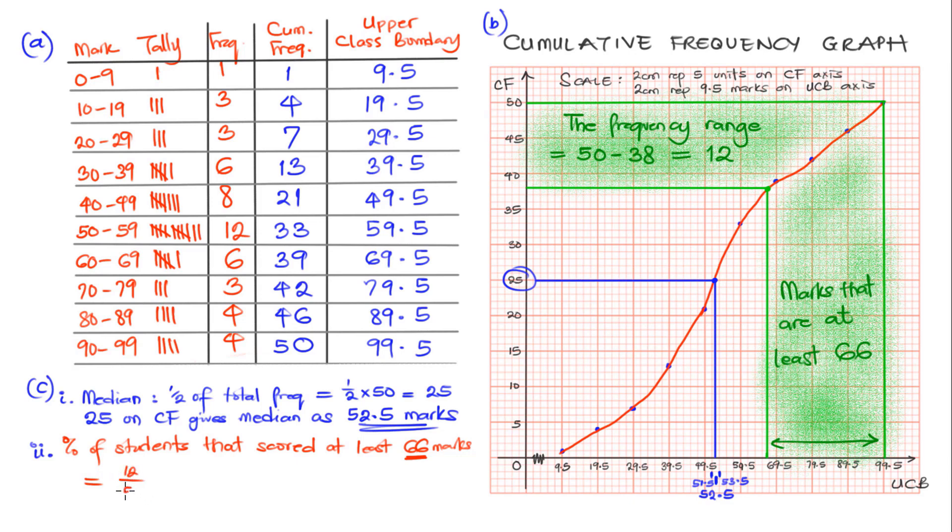We are asked to find the percentage of students that scored at least 66. So that will be 12 over the total students, which is 50, multiplied by 100%. If we calculate, this will amount to 24%. So 24% of the students scored at least 66 marks. And with that we are done with our question on the cumulative frequency graph.